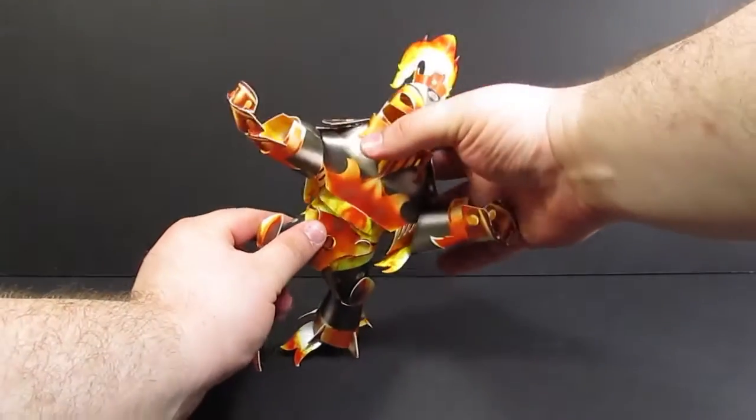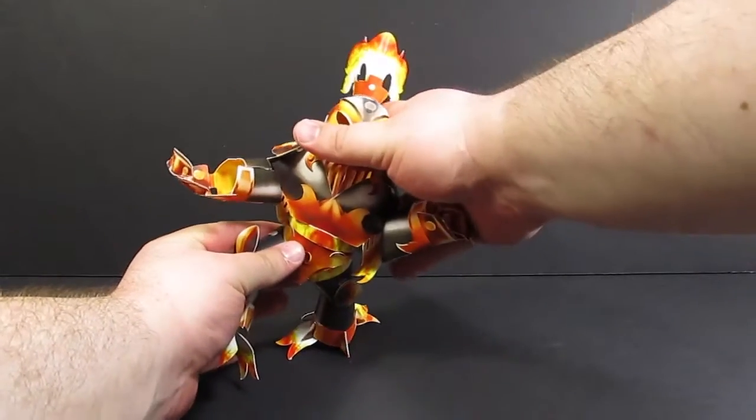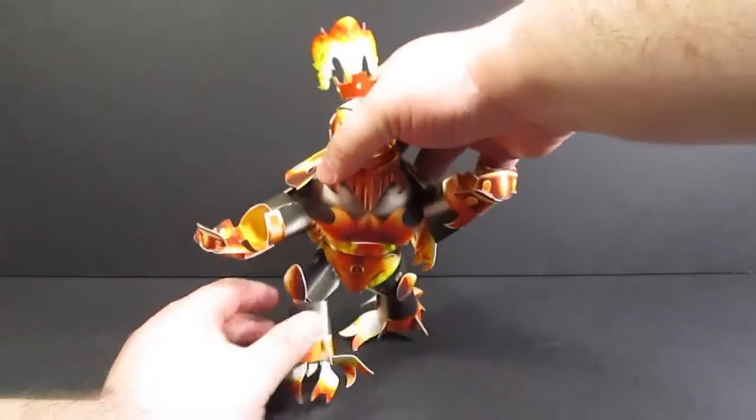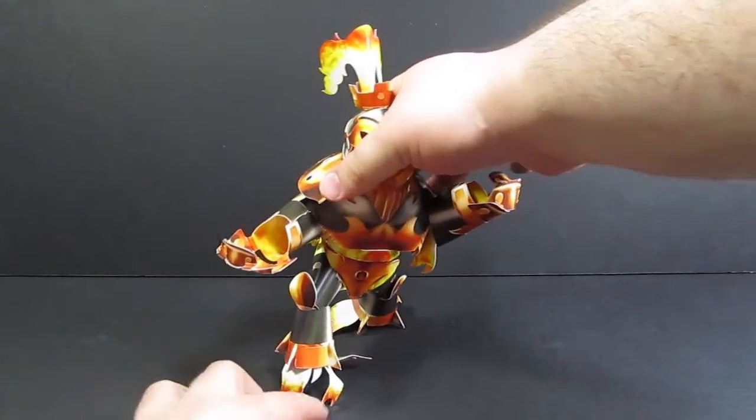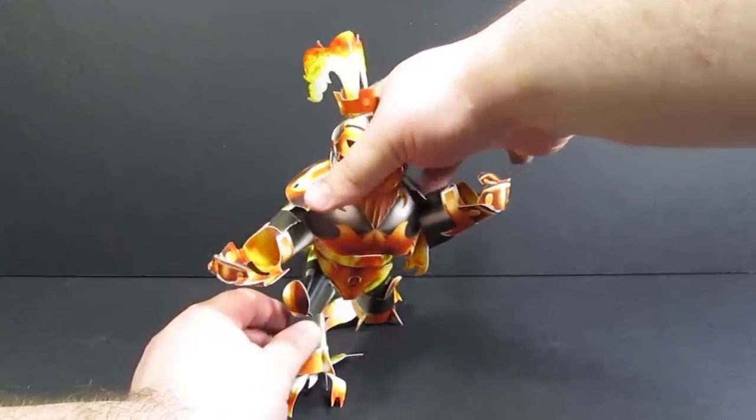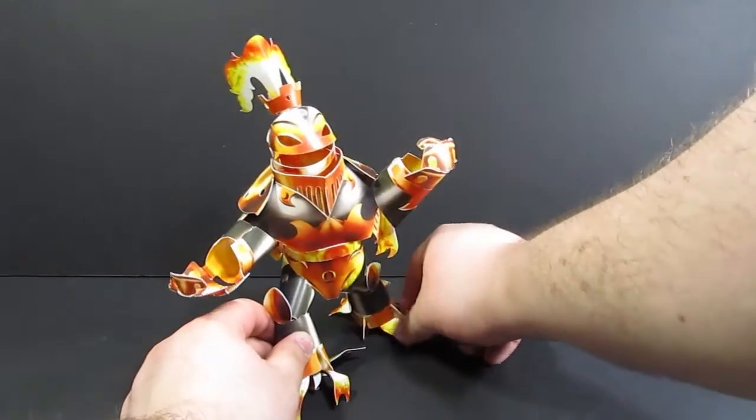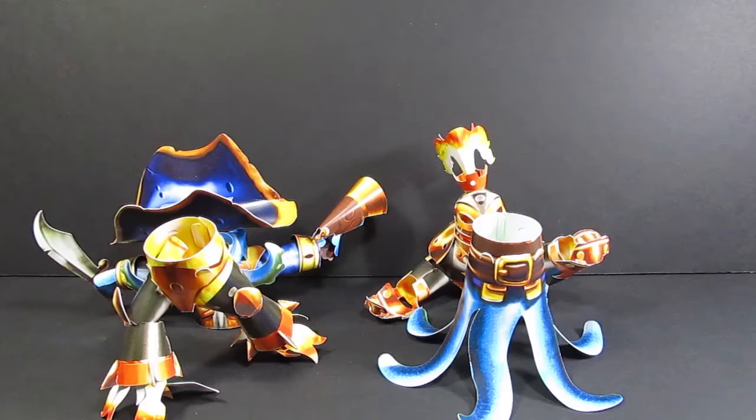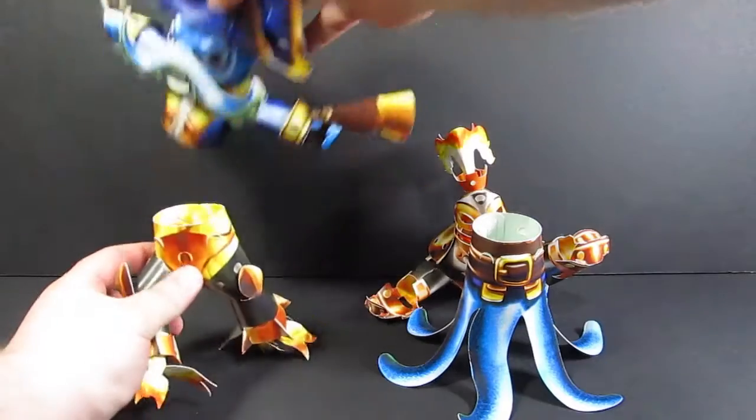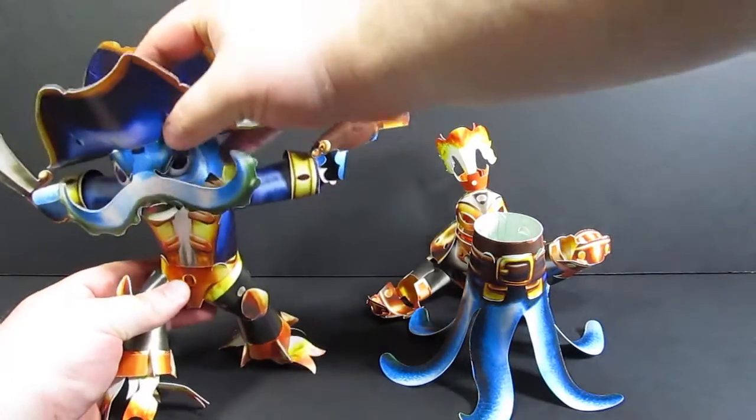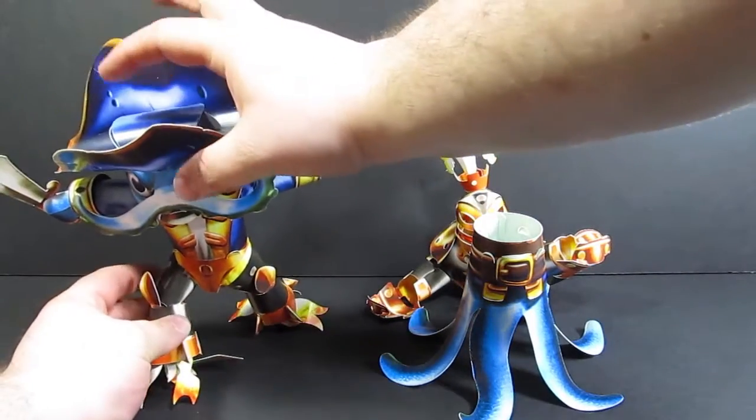To finish assembling Blast Zone, just connect the top and bottom halves. You may need to flex Blast Zone a little bit to make this happen. And again, position the flame so he can stand up. Once you have completed both models, you can have fun swapping them up. Make a Wash Zone or a Blast Buckler.